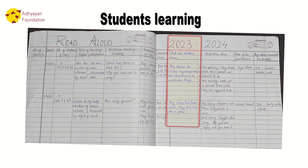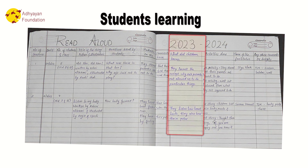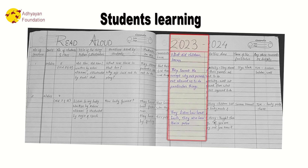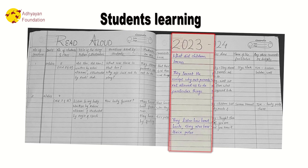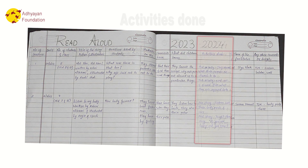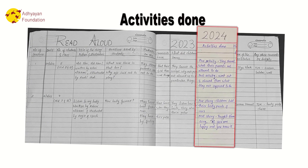What did the children learn is also very important. Every story has morals, and what the children understand according to those moral values should also be recorded here, so that it is maintained properly.